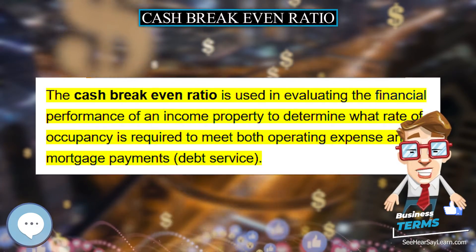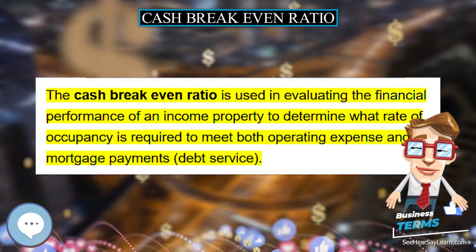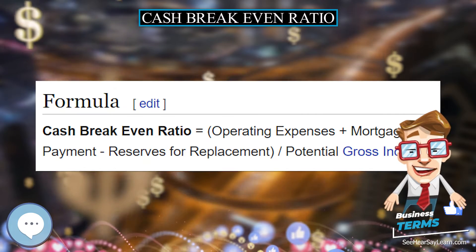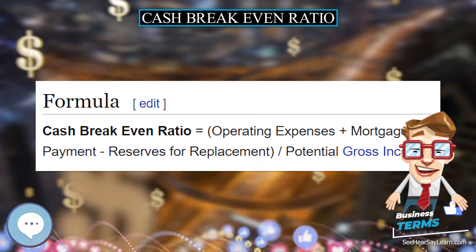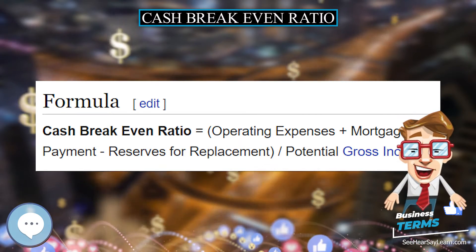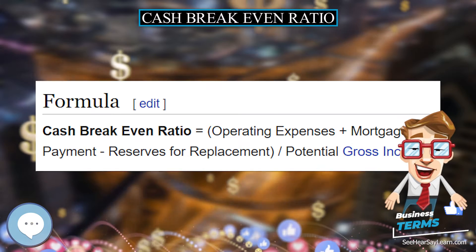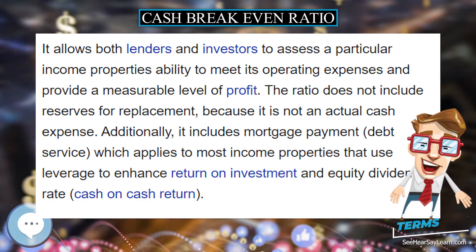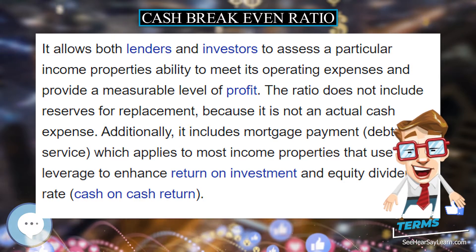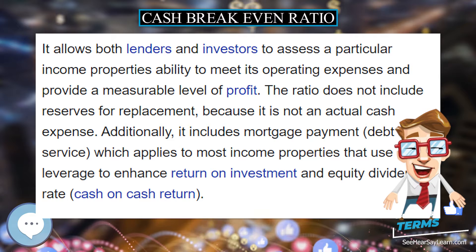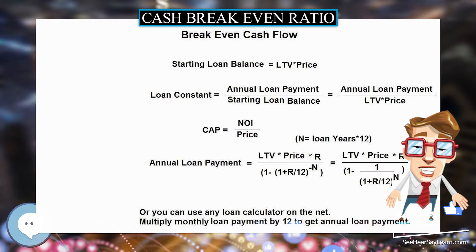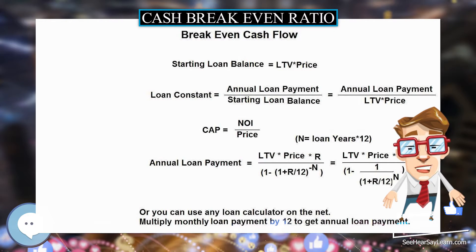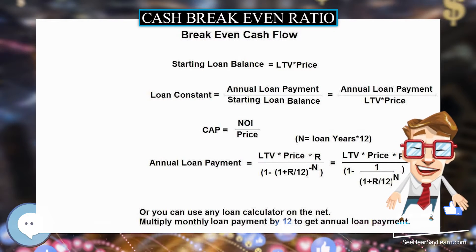The cash break-even ratio is used in evaluating the financial performance of an income property to determine what rate of occupancy is required to meet both operating expenses and mortgage payments (debt service).